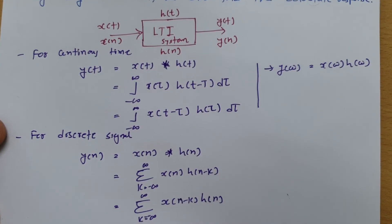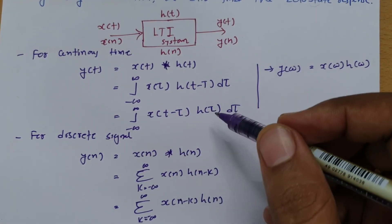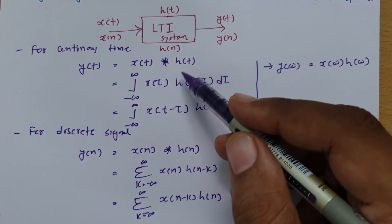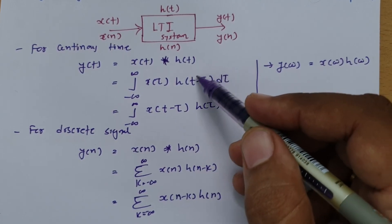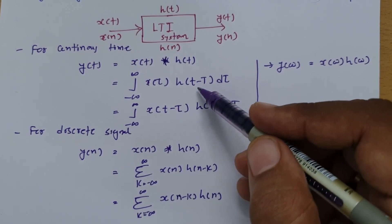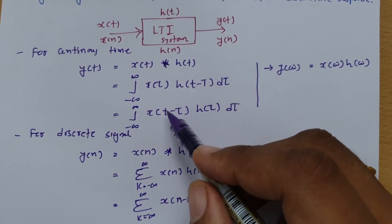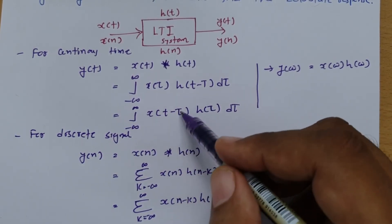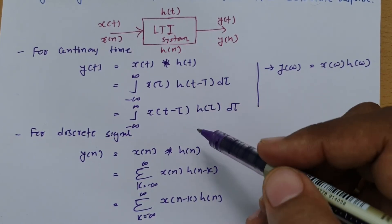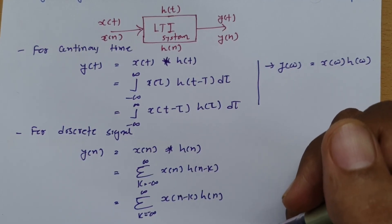Ultimately, one thing noticeable in both continuous time and discrete time: convolution involves multiplication of two signals where one signal is folded first. The minus sign indicates the folded version of the original signal, and then we shift it. There are two ways — you can fold the input signal and shift it, or fold the impulse response and shift it. When solving examples, you should choose whichever signal is easier to fold and shift.